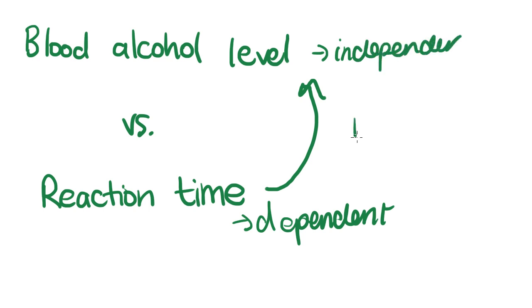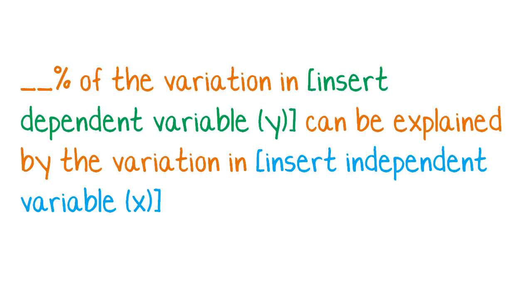So if we get an r squared value of 0.65, for example, what we're saying is 65% of the variation in your reaction time can be explained by the variation in your blood alcohol level. So if you're asked to interpret an r squared value on an exam, what you would say is blah blah blah percent of the variation in and then insert your dependent variable, can be explained by the variation in and then chuck your independent variable in the sentence there.